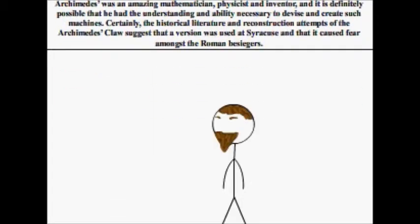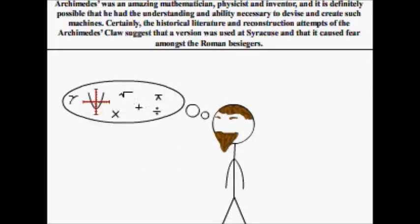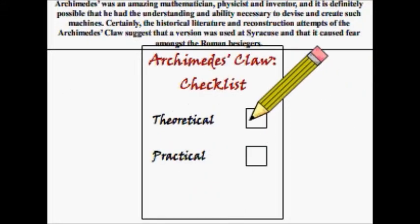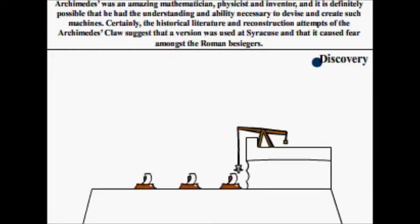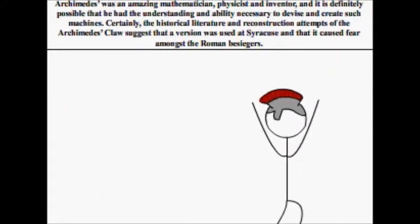Archimedes was an amazing mathematician, physicist and inventor, and it is definitely possible that he had the understanding and ability necessary to divine and create such machines. Certainly, the historical literature and reconstruction attempts of the Archimedes claw suggest that a version was used at Syracuse, and that it caused fear amongst the Roman besiegers.